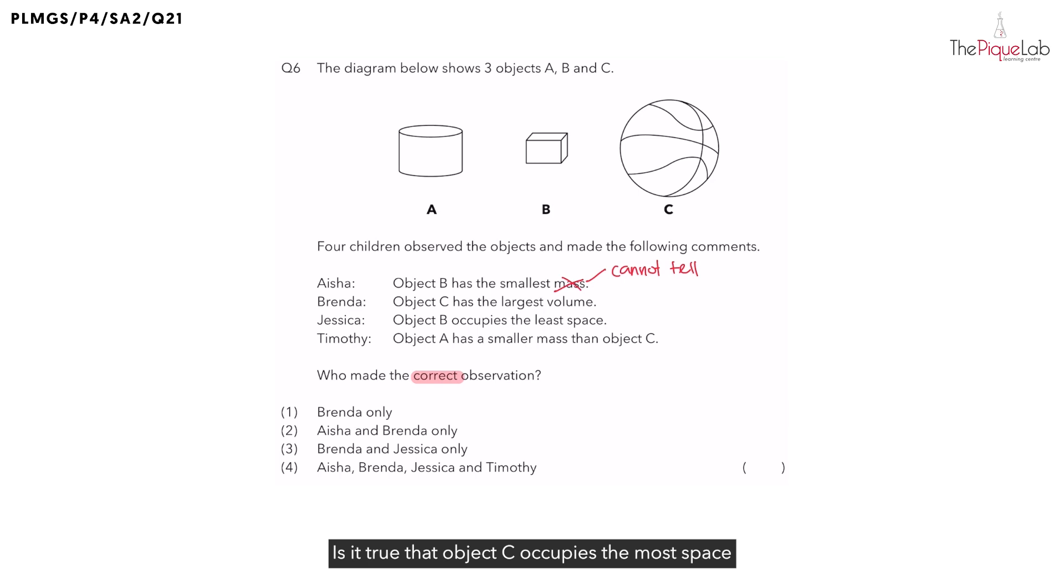Is it true that object C occupies the most space in this diagram? Yes. We can see from this diagram that object C has the largest size and occupies the most space. Therefore, Brenda is right that object C has the largest volume.